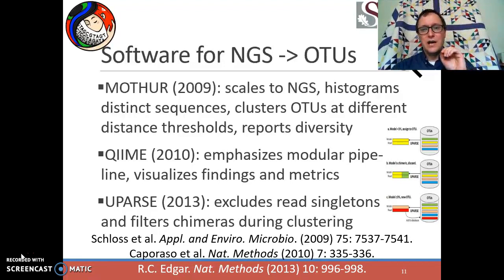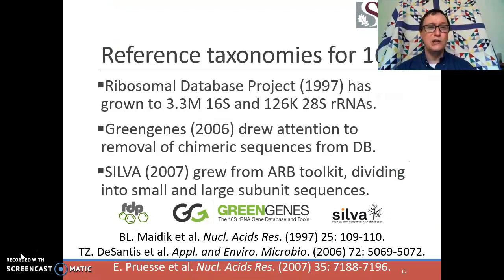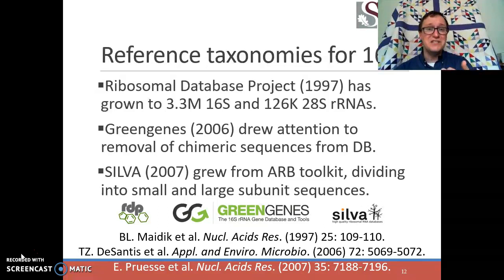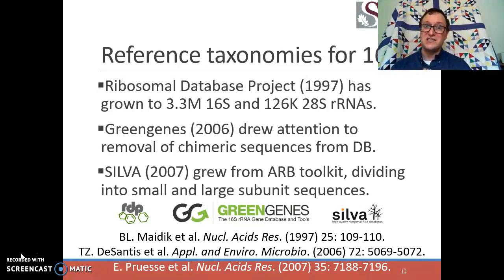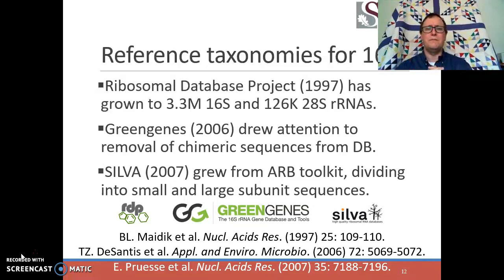Now we have tools that can handle NGS data, cluster OTUs, and give us measurements of diversity. But we need one more tool: the ability to look up a particular 16S rRNA sequence and get back a biological explanation for what it is. The OTU is much more valuable if you can assign a genus and species to it. Sadly, many reference taxonomies for 16S rRNA struggle with exotic sequences. If an organism has been cultured and fully sequenced, we'll be good at matching that OTU to a taxonomy. But for a sequence pulled from the ocean where fewer organisms have been sequenced, you may have a big problem interpreting what that OTU is biologically.